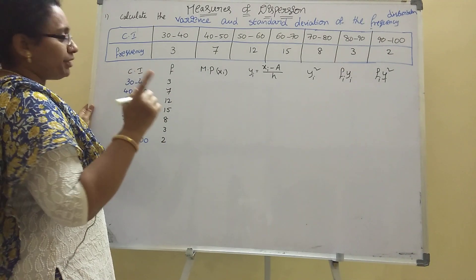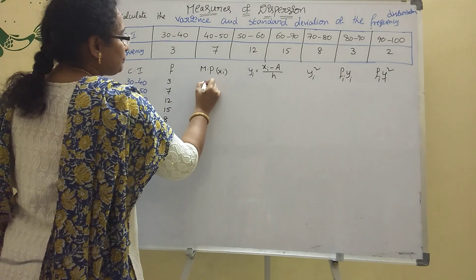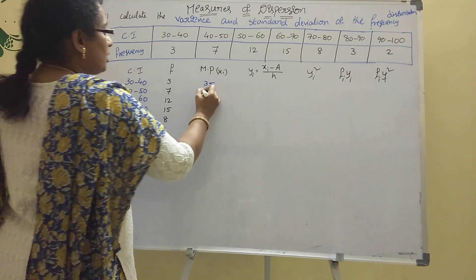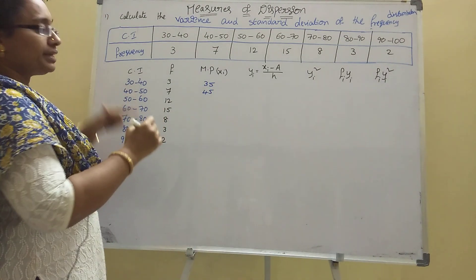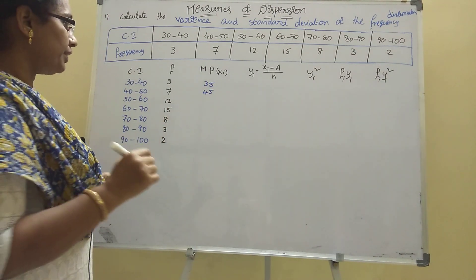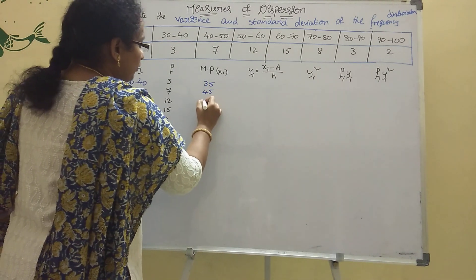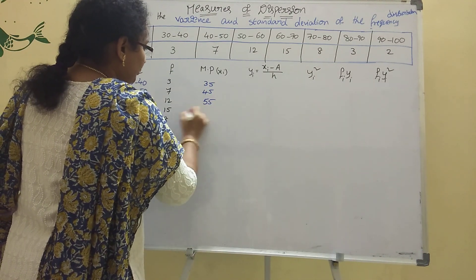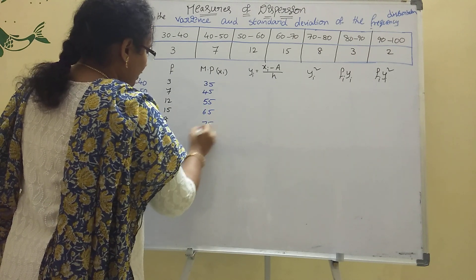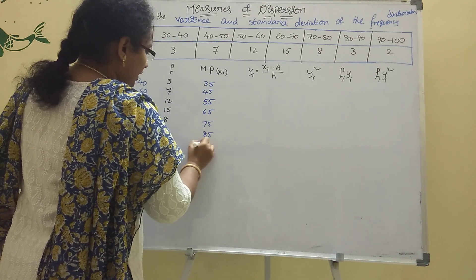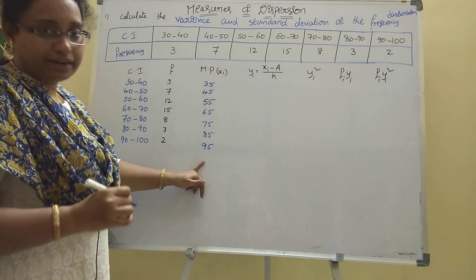The midpoint xi values are filled in: 40, 45, 55, 65, 75, 85, 95. The class intervals run from lower to upper, with h equal to 10, so we add 10 each time. The last interval is 90 to 100, giving midpoint 95.